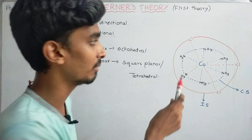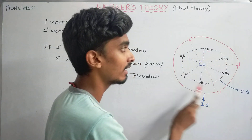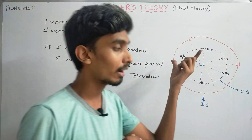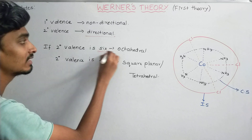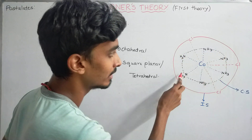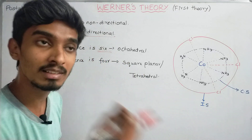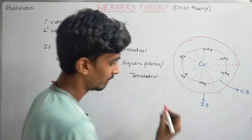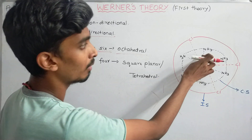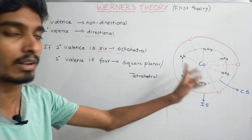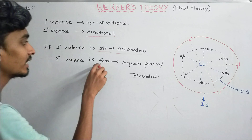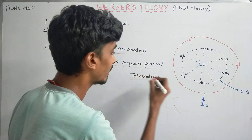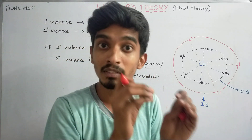Secondary valence is directional because it represents the coordination number — how many ligands are attached and in which directions. For example, if there are 6 ligands (1, 2, 3, 4, 5, 6 ammonia ligands), the secondary valence is 6. This directionality allows us to predict the geometry of the complex — for example, whether it is octahedral, square planar, or tetrahedral — according to Werner's Theory.